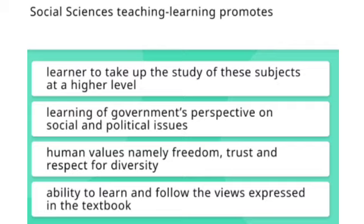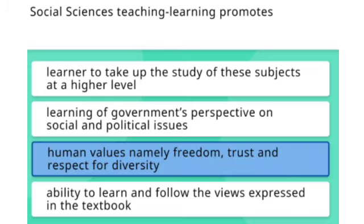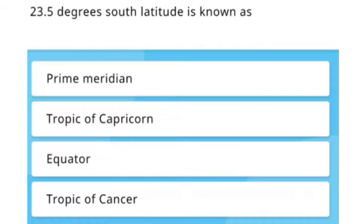The next question: Social Science teaching and learning promotes — Option 1: Learner to take up the study of these subjects at a higher level. Option 2: Learning of government's perspective on social and political issues. Option 3: Human values, namely freedom, trust and respect for diversity. Option 4: Ability to learn and follow the views expressed in the textbook. The right answer is Option 3 — human values, namely freedom, trust and respect for diversity.